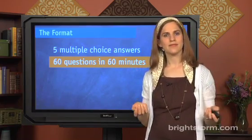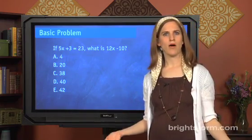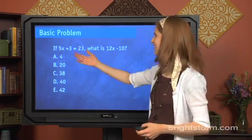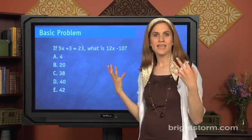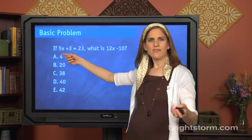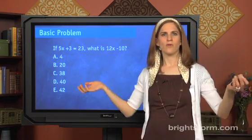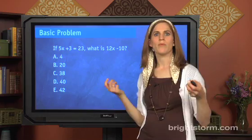Let's look at the question types that you'll see. There's two types. First, a really basic problem. Very straightforward. Like this. Simple algebra, and we'll tackle these actual problems later, but just to see what they look like. If 5x plus 3 equals 23, what's 12x minus 10? Not a lot of words. Straightforward, simple math problem.